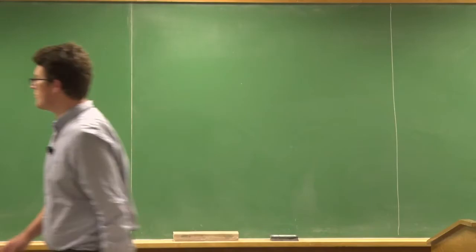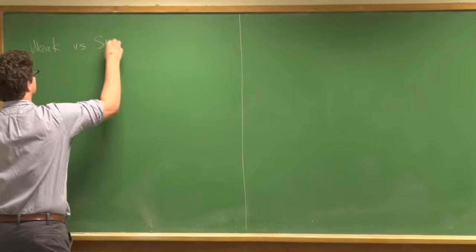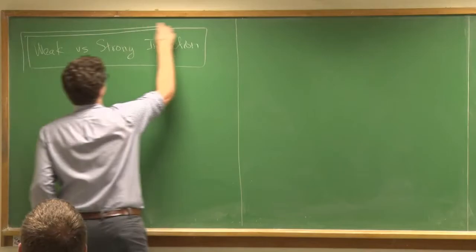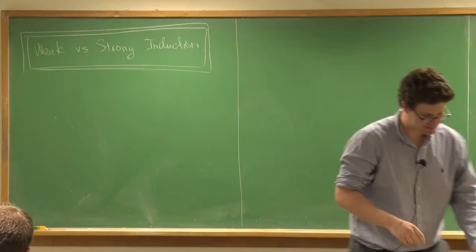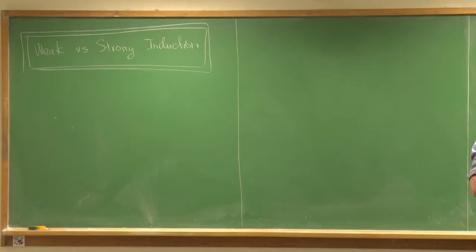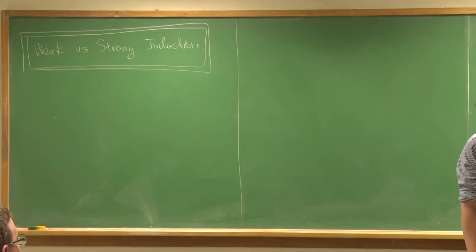Let me go more about weak and strong induction. In a previous class, we talked about signatures and structures. Signatures are the symbols that you're allowed to build your formulas with, and a structure is something that allows you to interpret the symbols. So if you have a plus sign, that means you'll have a set with a binary operation. If you have a less-than-or-equal-to sign, you'll have a set with a relation that allows you to evaluate whether it's true against elements.